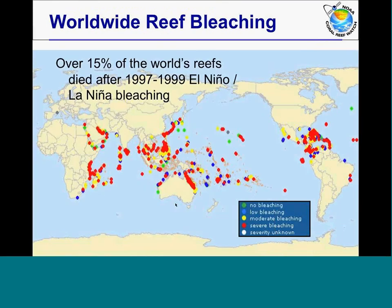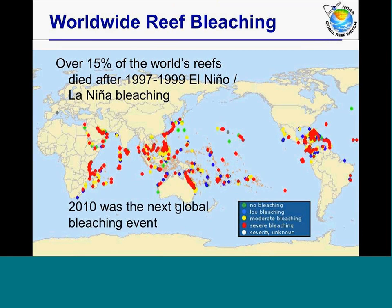Let's move into the next segment of the video — the section where we talk about 2010, which was an extraordinary year in terms of heat stress on corals globally. What I have on screen now is showing all the areas around the world affected by bleaching in 1997-99, during a major El Niño and La Niña event — which prior to 2010 was the only time we had seen massive bleaching around the world. In that case, we had what's been estimated to have been the loss of about 15% of the world's reefs.